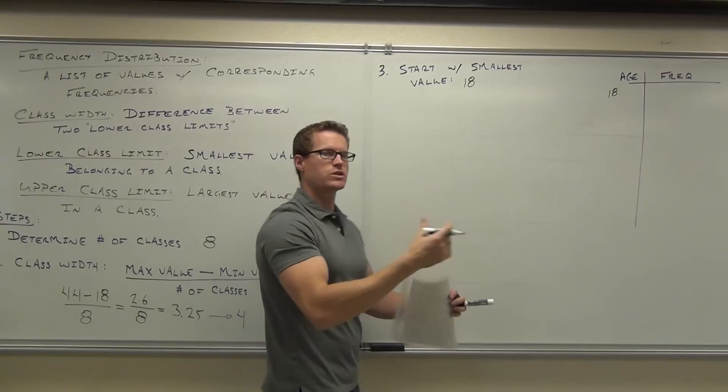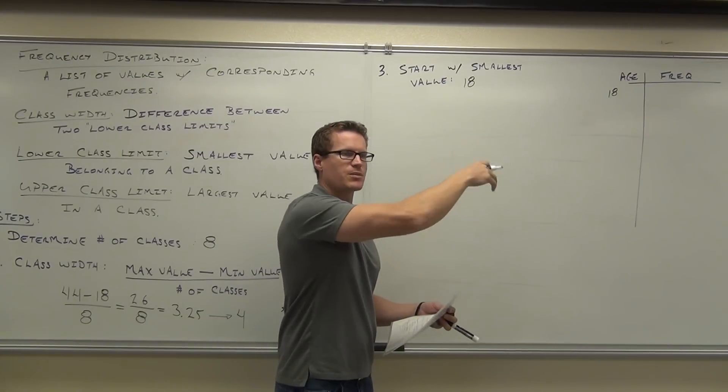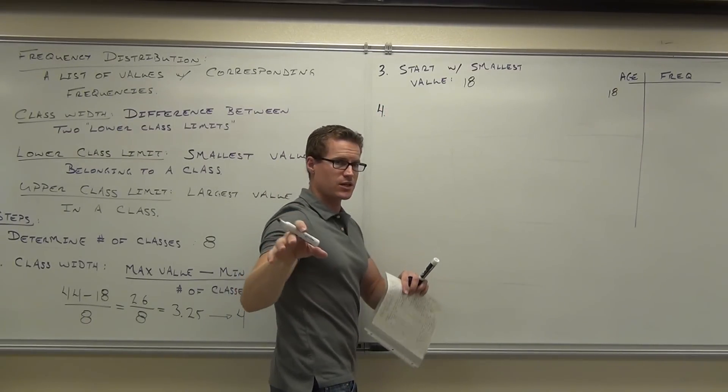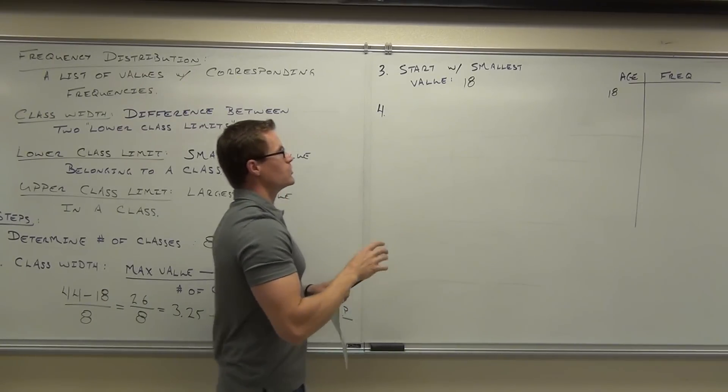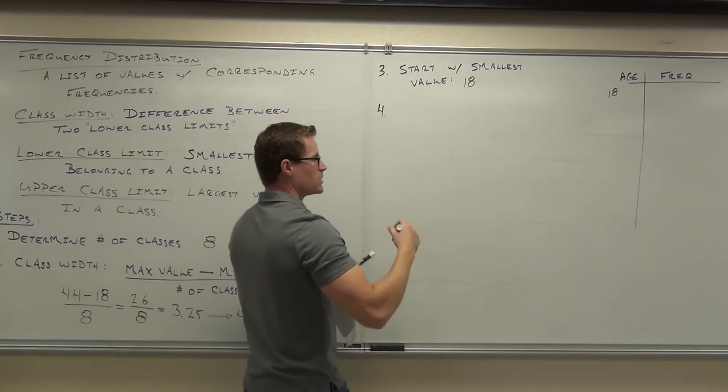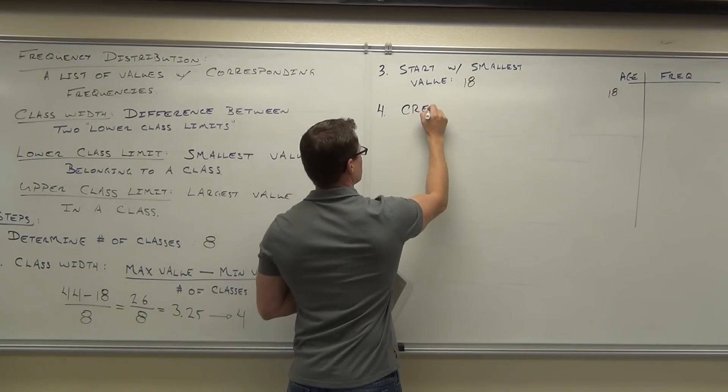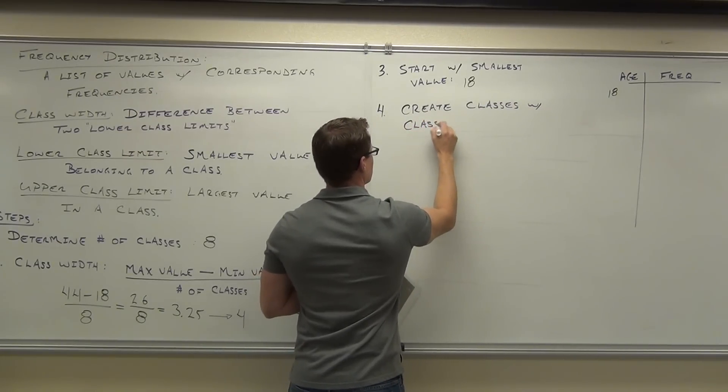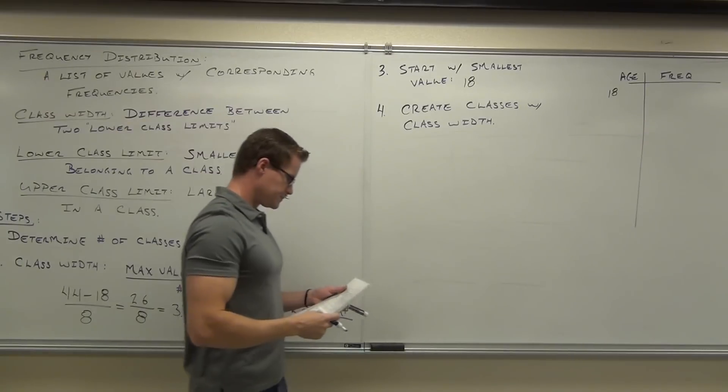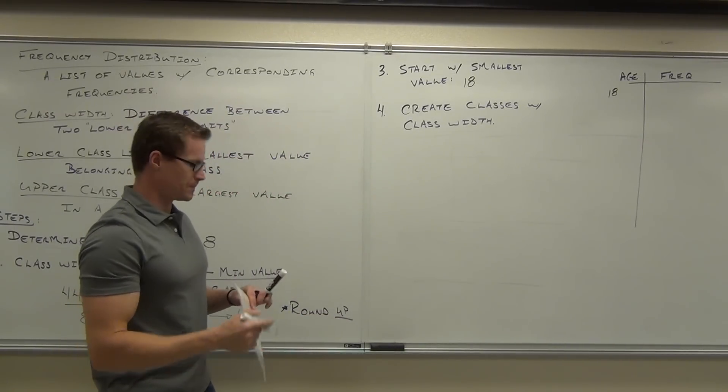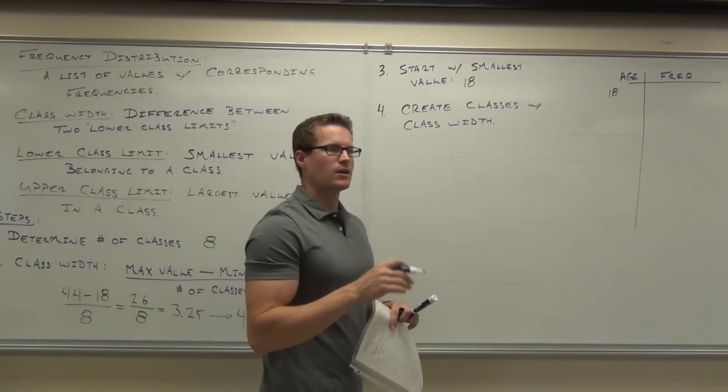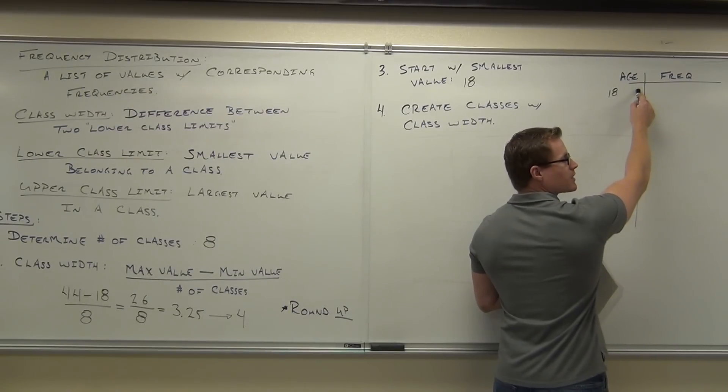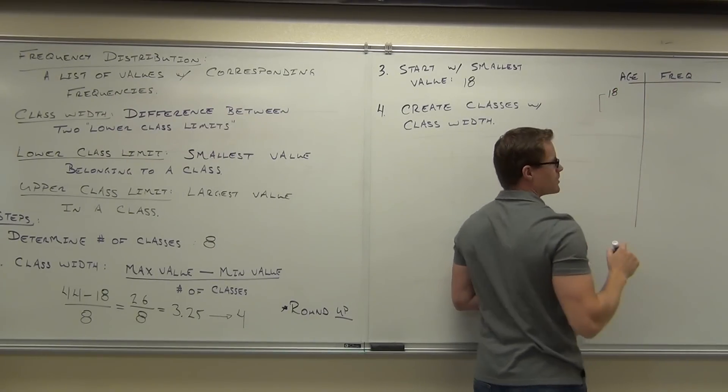The next step is the most important step. Because everyone can count. We can all count frequencies. But making up the classes, that's the hard part where people get messed up. So pay close attention to this. If you don't quite get it, go back on this lecture online and watch it again until you get this down. What you're going to do is, after you start with the smallest value, you're going to create the classes using the class width. Here's the key. The class width is not the difference between 18 to this number. This would be the upper class limit. The class width is the difference between this number and this number.